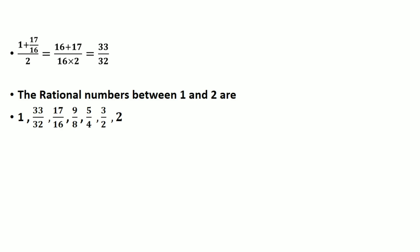The 5 rational numbers found between 1 and 2 are: 33/32, 17/16, 9/8, 5/4, and 3/2.